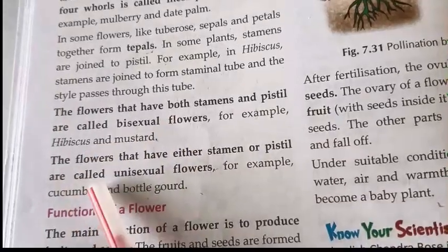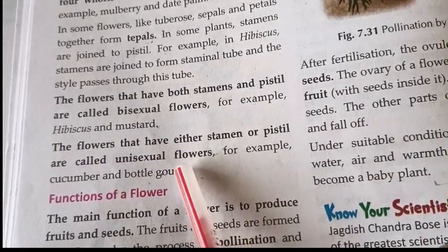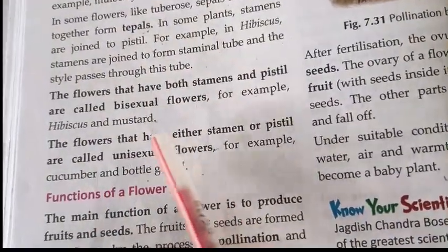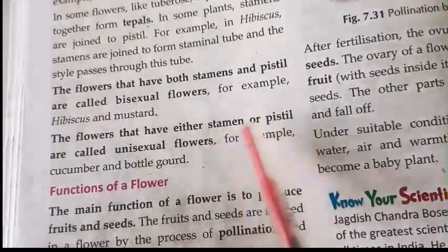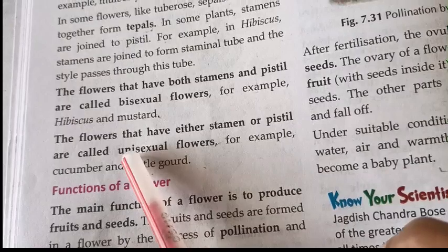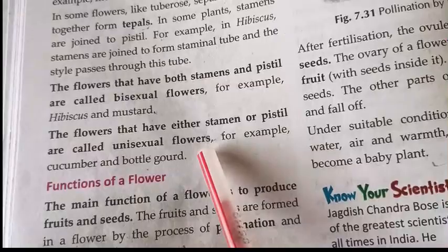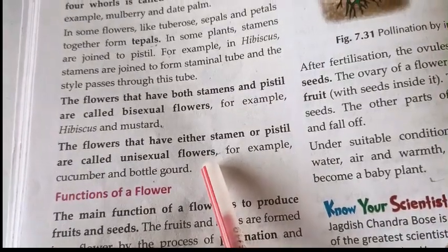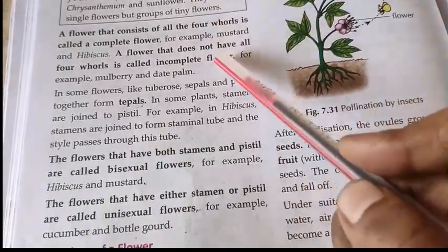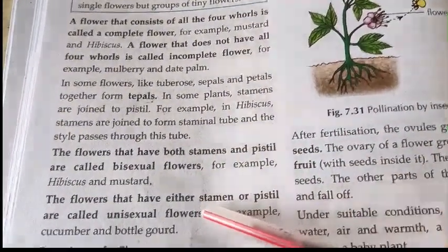The flower that has either stamens or pistil is called a unisexual flower — for example, cucumber and bottlegourd. Uni means one, so if a flower contains only one sexual organ, that flower is called a unisexual flower.